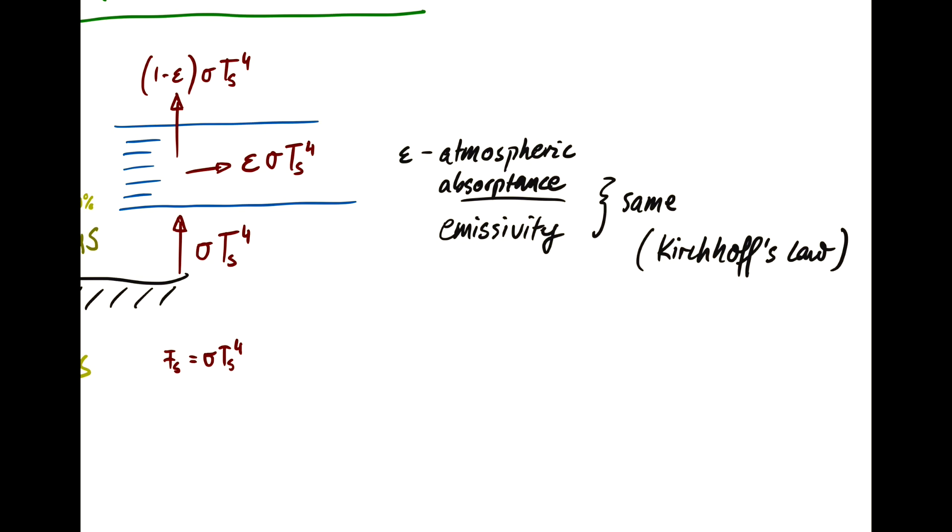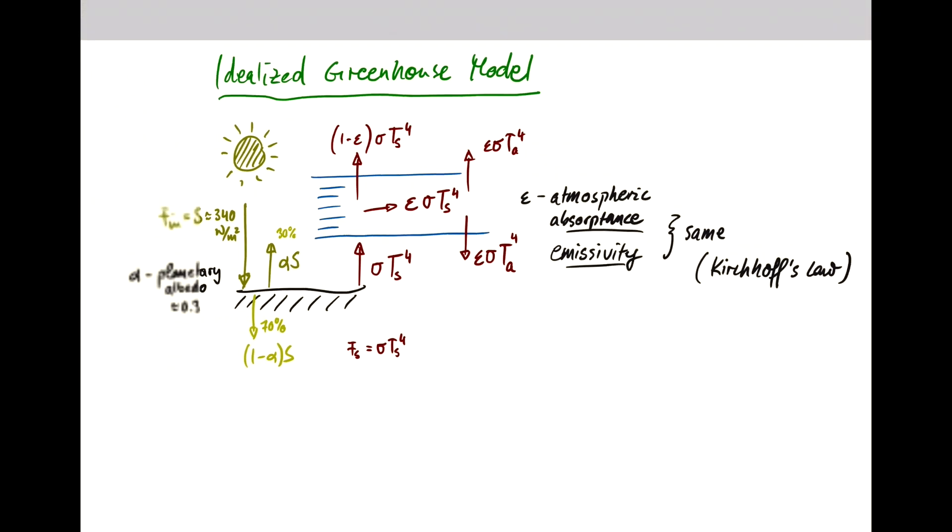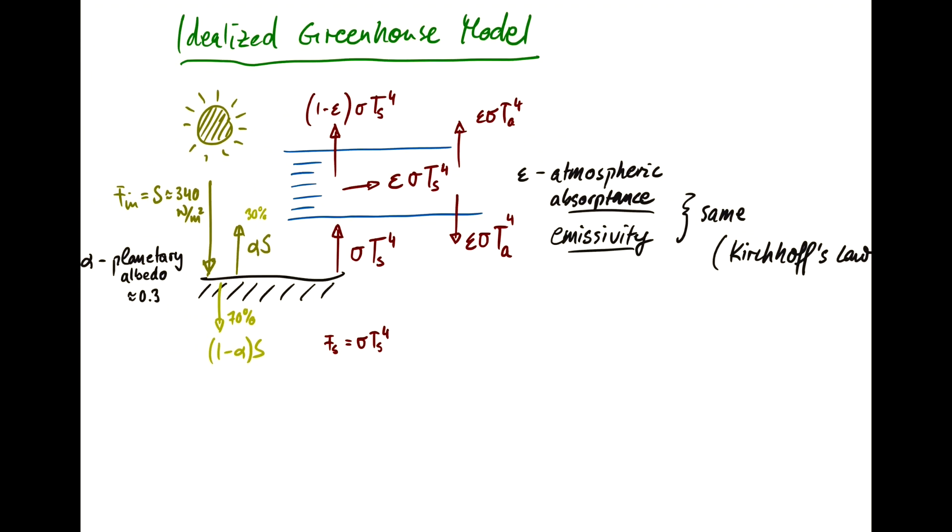The energy emitted by the atmosphere goes in both directions, down and out. So you have additional emitted energy coming back to the surface of the Earth. That would be epsilon sigma T_a to the 4th power, and that goes in both directions. Now we have all the ingredients we need to estimate what T_s would be.